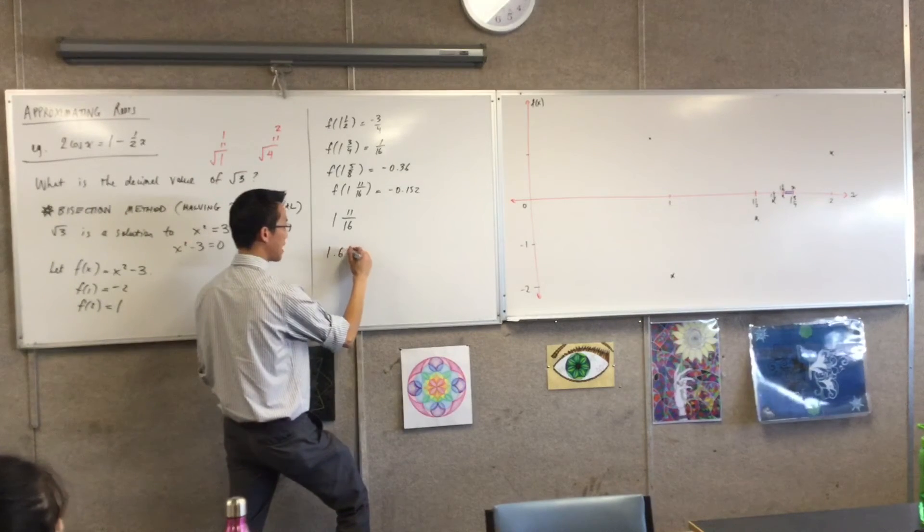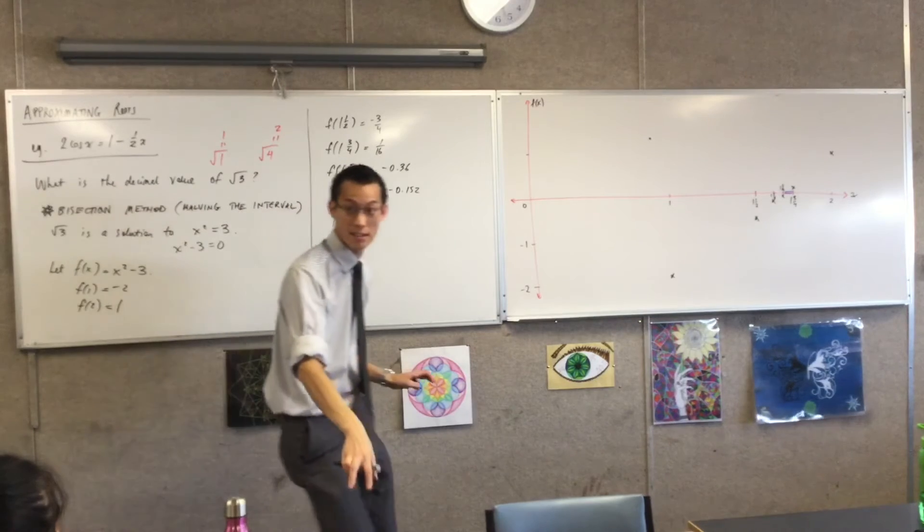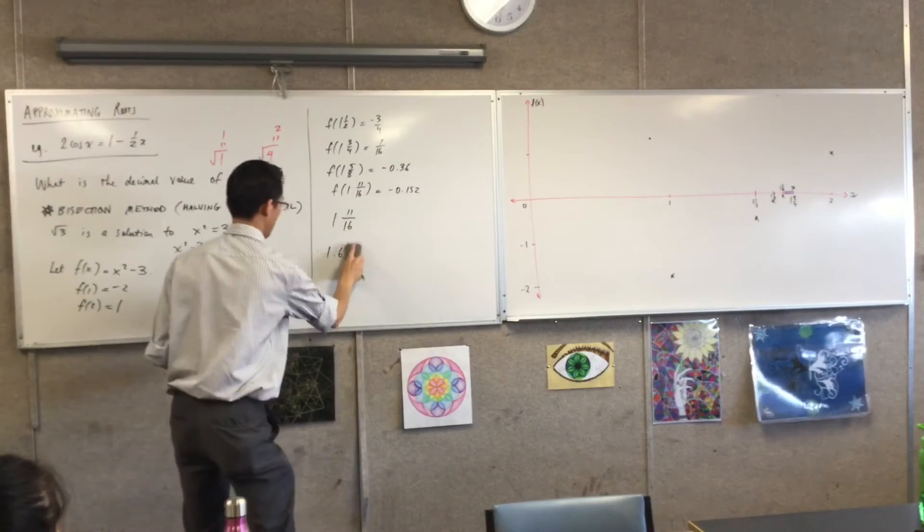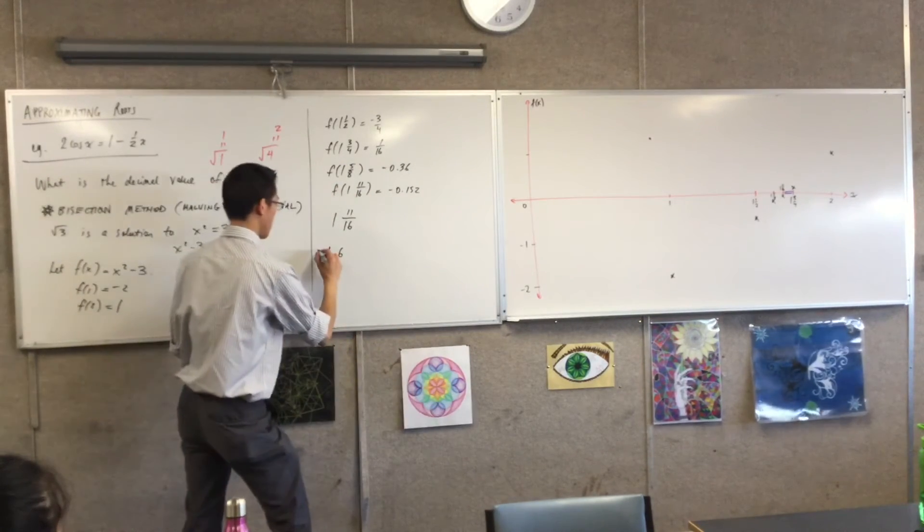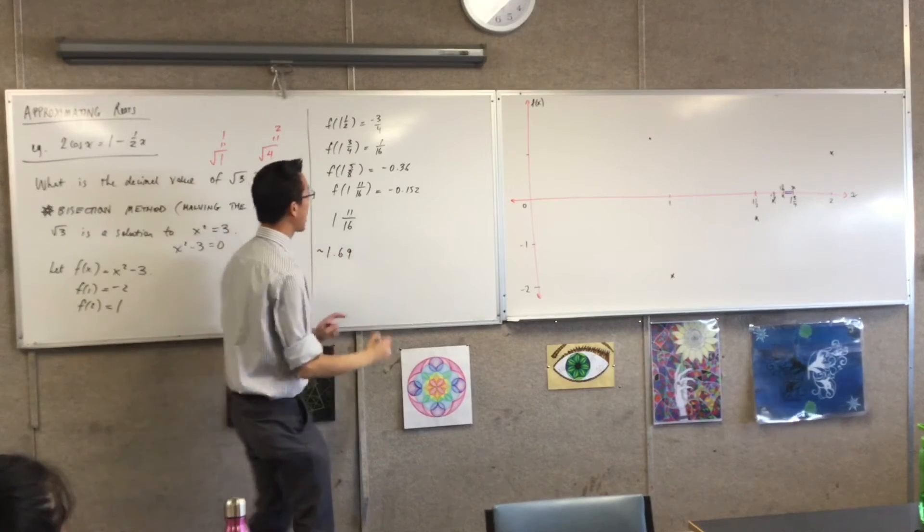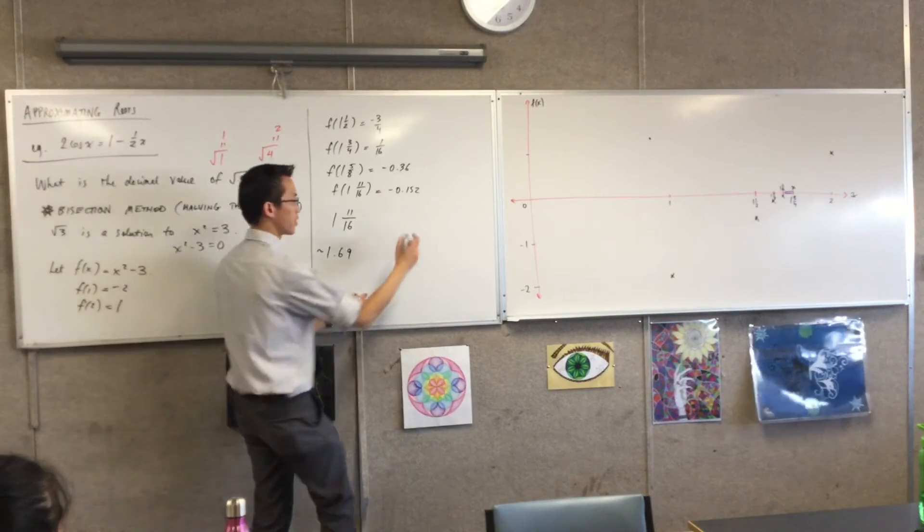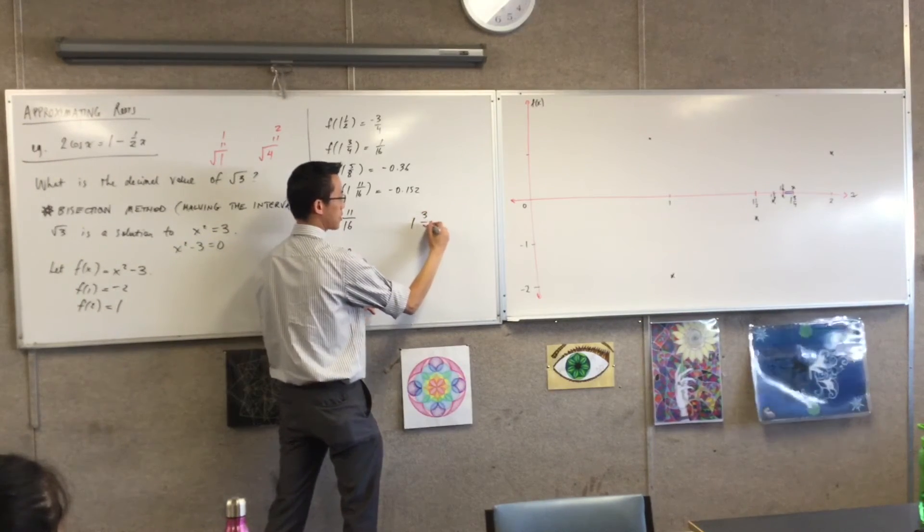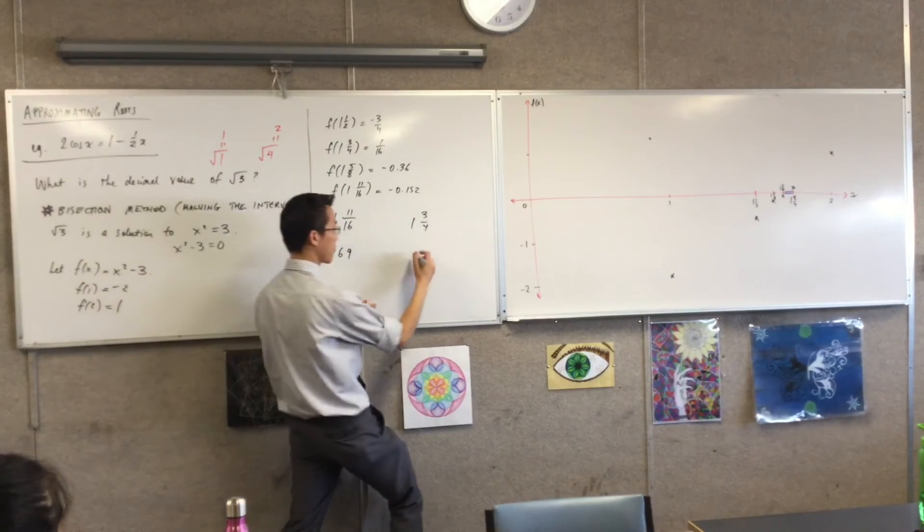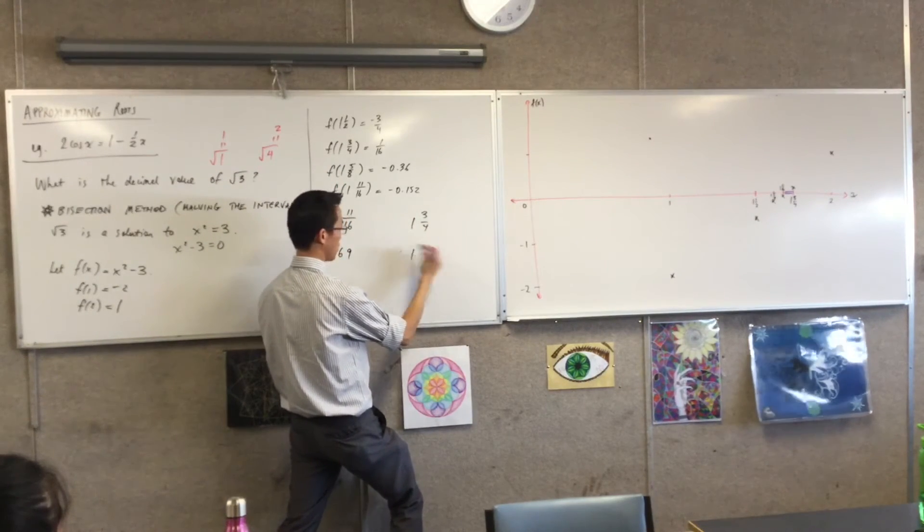What is 1 and 11 sixteenths? What is that actual decimal value? 1.68. Is it 69 or 68? 687. 687. I'll just wrap it up. And what is our upper one? That's 1 and 3 quarters. We know what that is. That's 1.75. So that's 1.75.